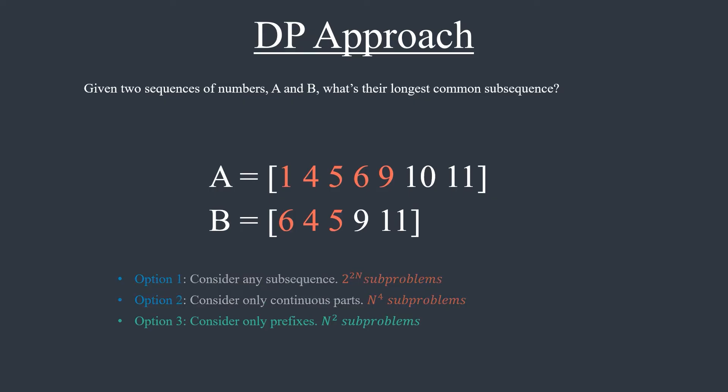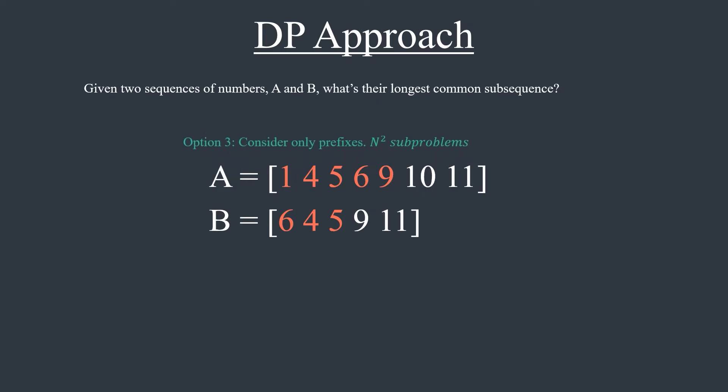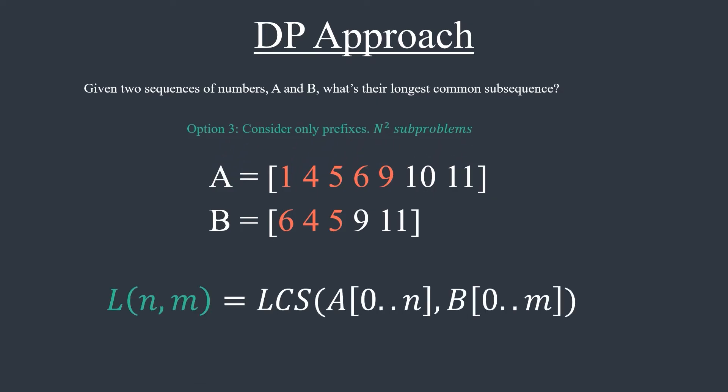I can't think of other options for this task, so let's start with the approach where a sub-problem L[i,j] represents the longest common subsequence for the first i elements of array A, and the first j elements for array B. For example, L[5,3] would be a solution for the highlighted sub-problem on the screen.